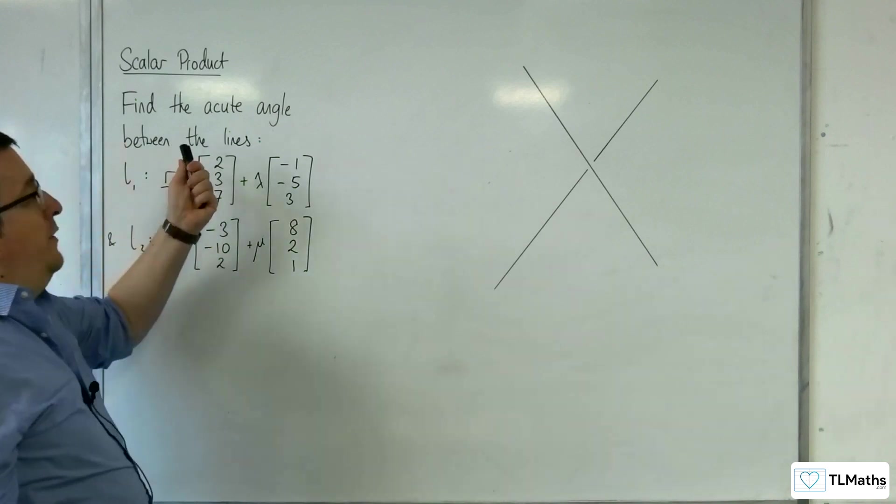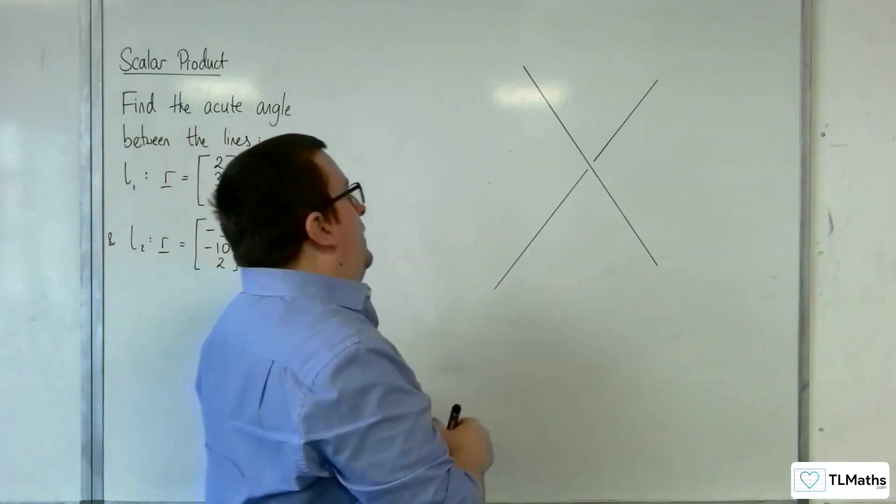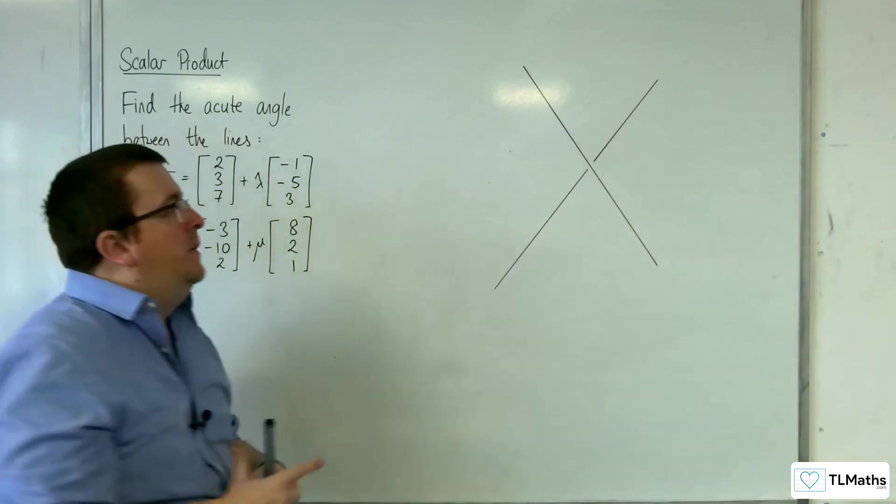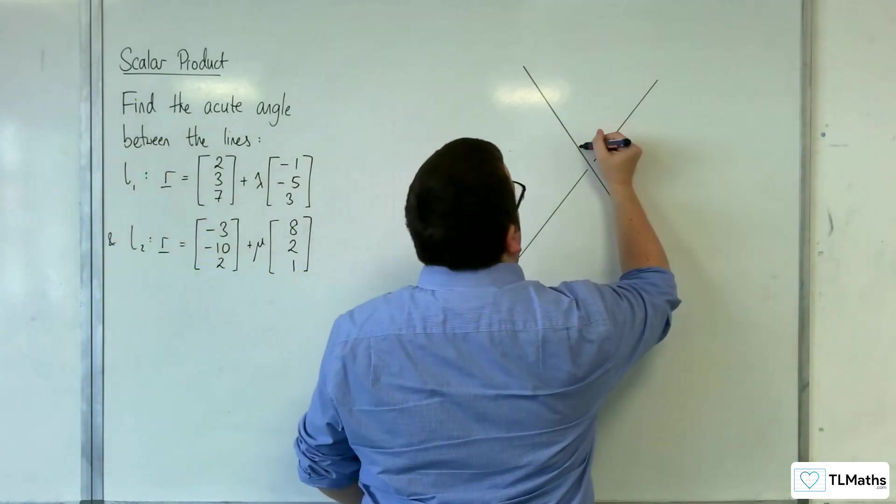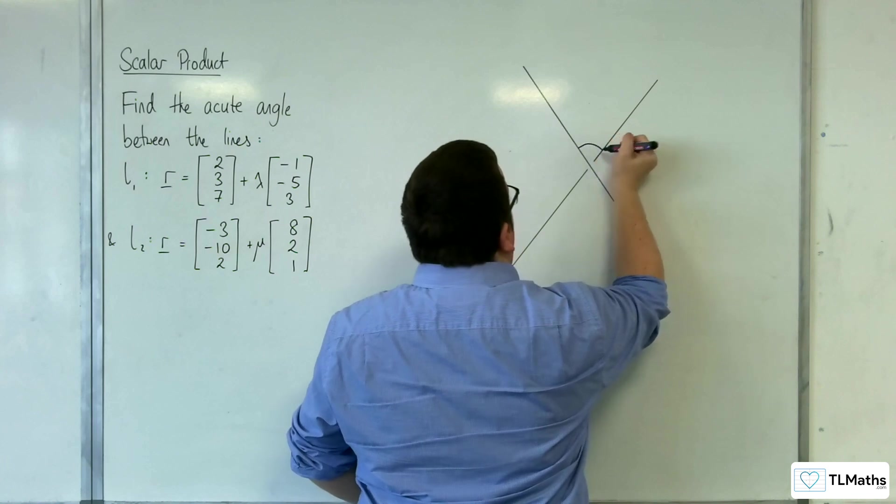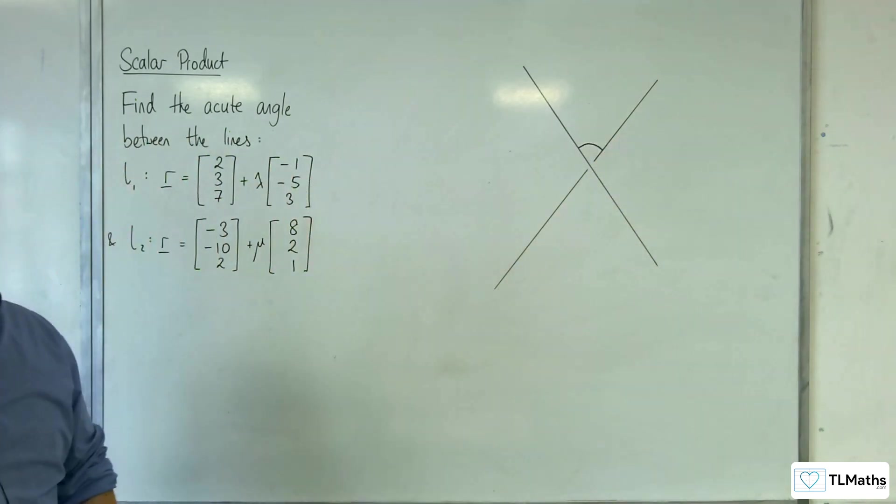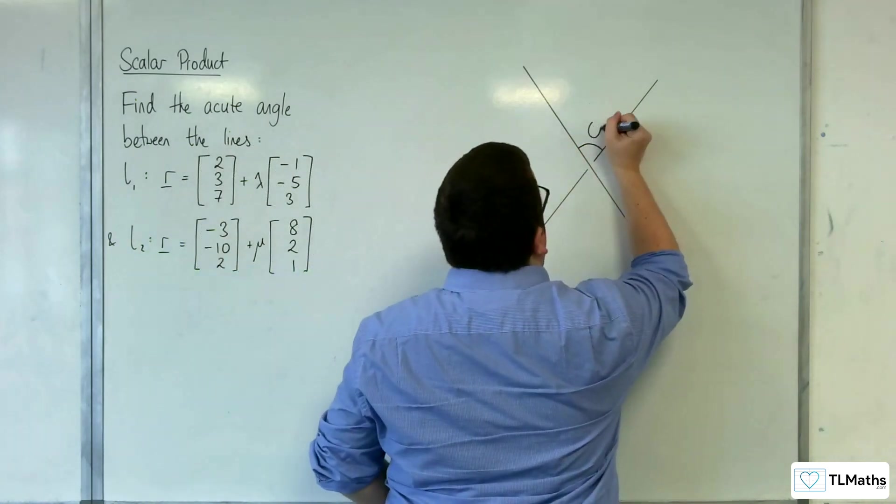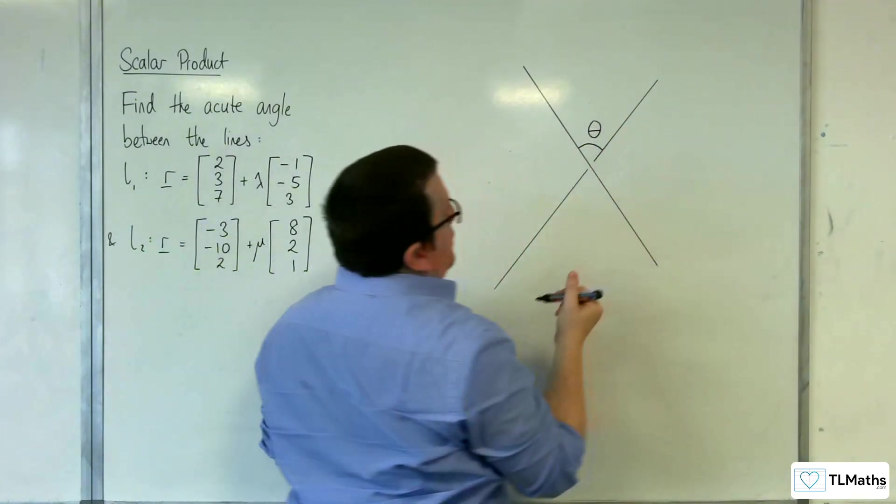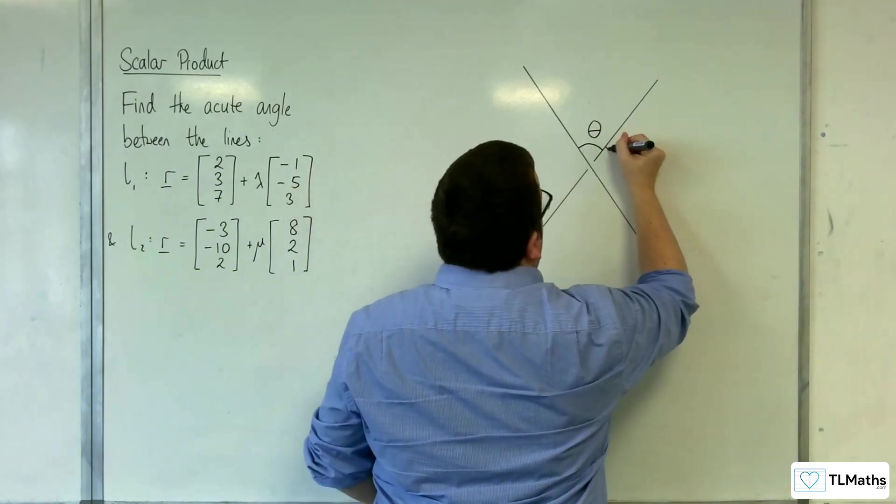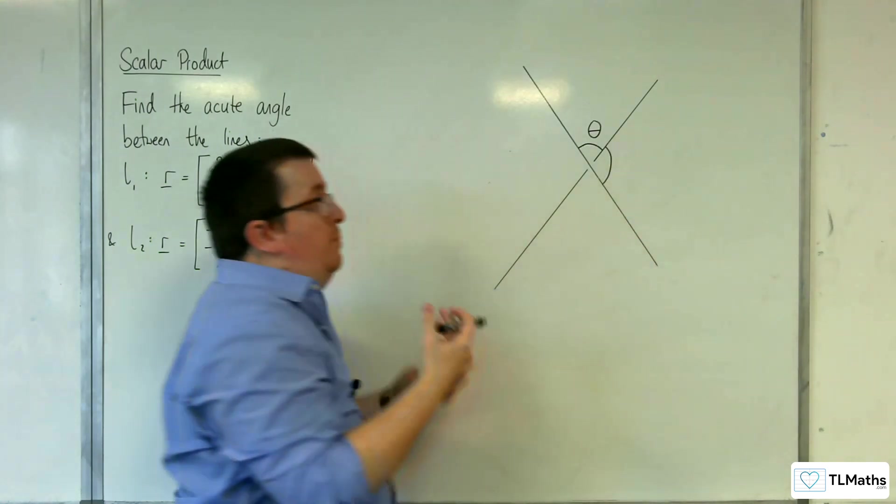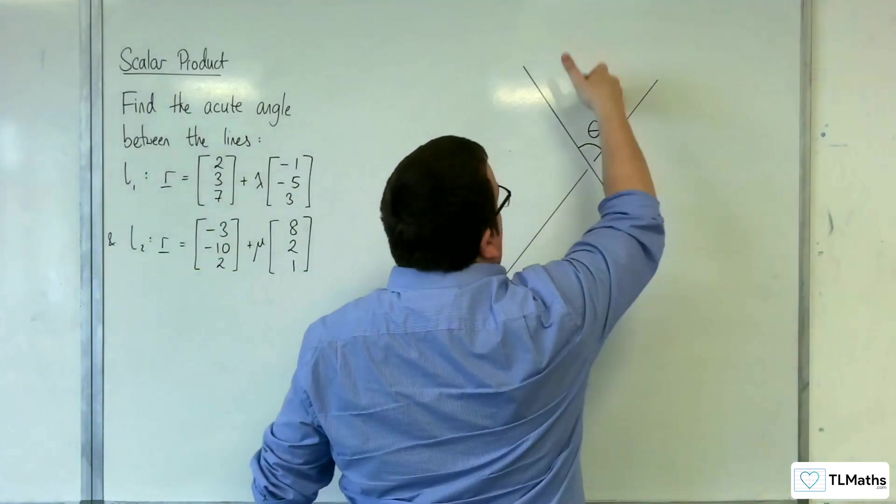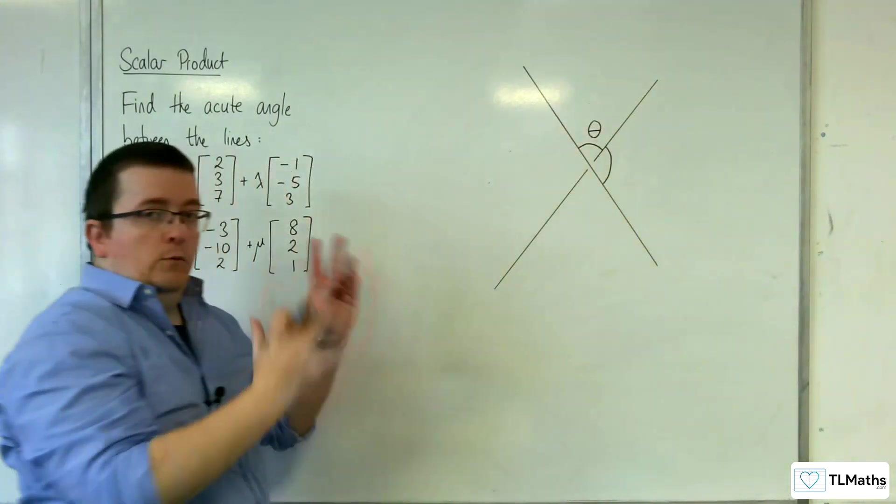Now we're being asked to find the acute angle. So what you need to get your head around is that even though the two lines don't intersect, you can still work out the angle that is made between them. And so it is found by looking at this angle here, which will be the acute angle of the two. You'll notice that there are going to be two possible answers because there's this one and there's this one, depending on which way you look at it.